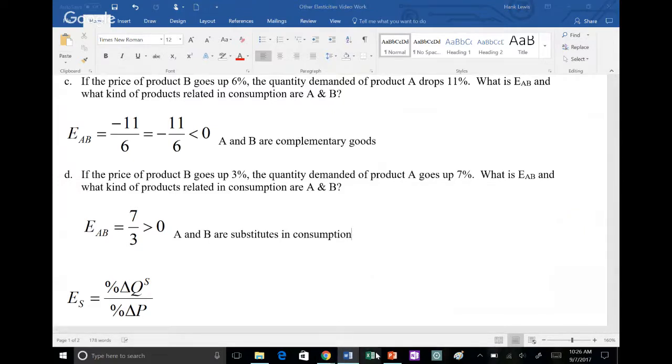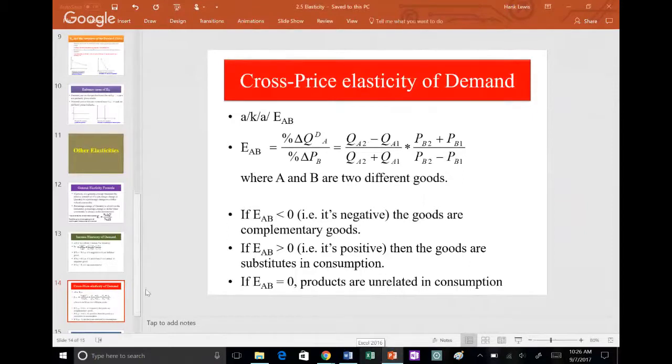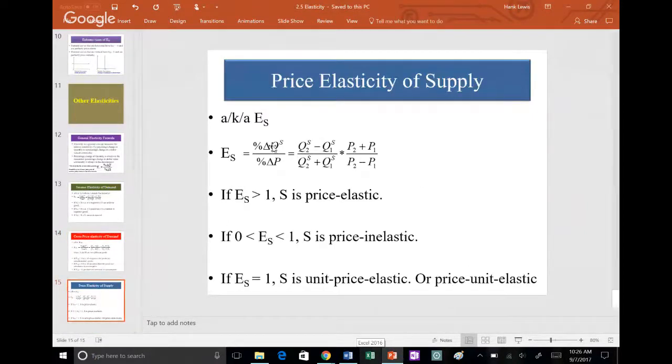Our last elasticity is called the price elasticity of supply, also known as E sub S. Please note we're only using the point formulas. E sub S is the percent change quantity supplied divided by percent change in price. This one is either positive or zero, it can never be negative. Our breakdown goes from is E sub S greater than one, or is it between zero and one, or is it equal to one. Equal to one is like a Sasquatch sighting, it's rare, we don't worry about that. Greater than one, between zero and one are what you need to know. Percent change quantity supplied divided by percent change price is the formula.